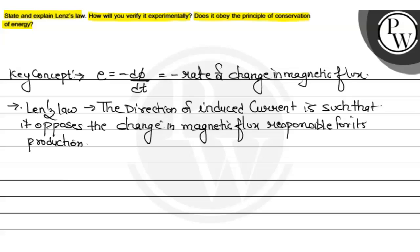How will you verify it experimentally? We have a coil here, and we have a magnet — this is the North Pole and this is the South Pole. Now we need to identify the current. When you move the North Pole towards the coil, the number of magnetic field lines passing through the coil increases.